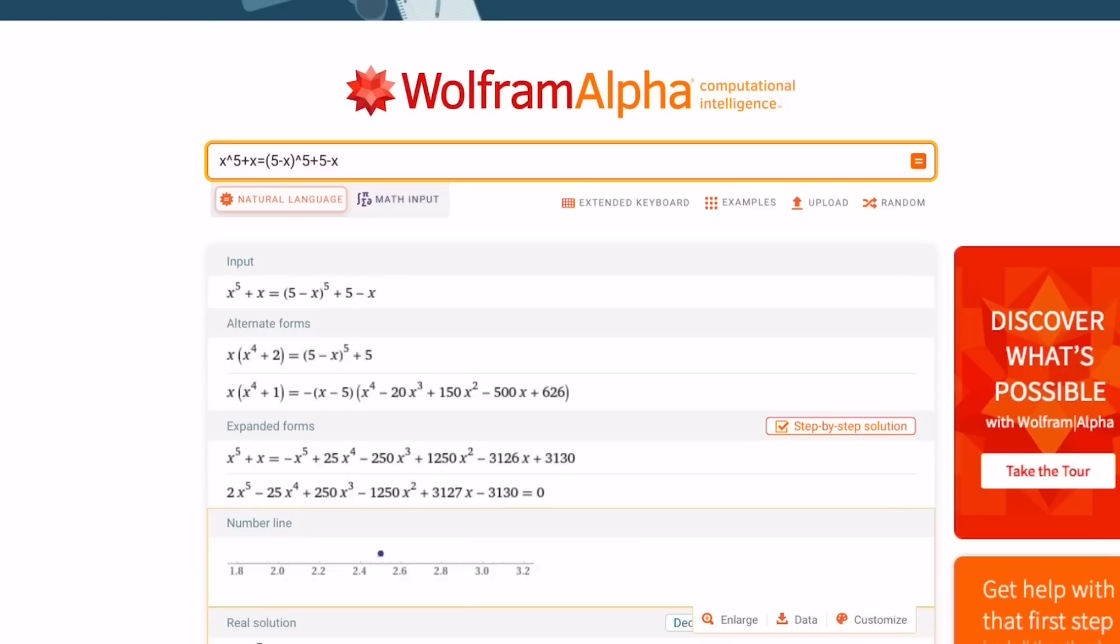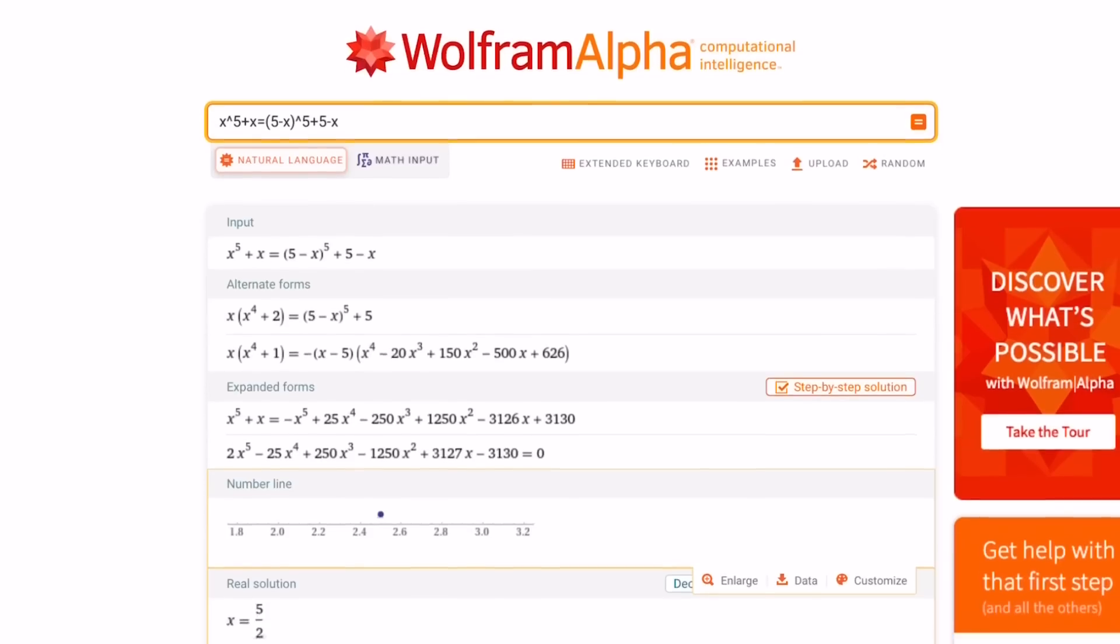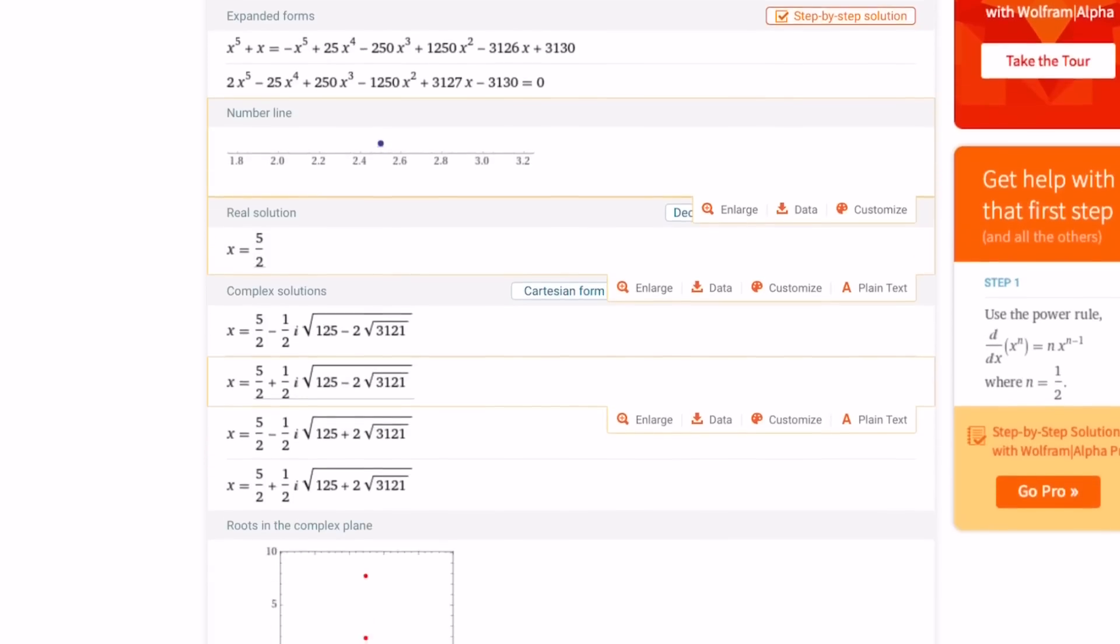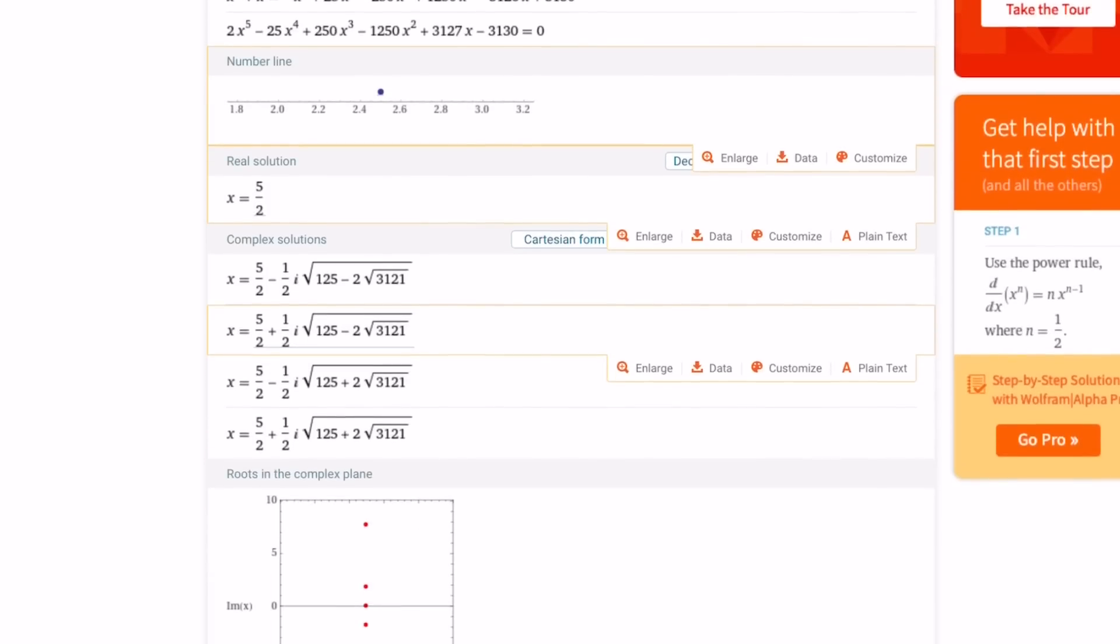So here's Wolfram Alpha with the solution. You can see the input and then it simplifies it, writes it in a couple different ways, so on and so forth. And now you can see here clearly that 5 halves is a solution. That's the only real solution. Guess what? The other solutions are all non-real complex solutions, but they are conjugates. So they kind of come in nice pairs as a quartet.